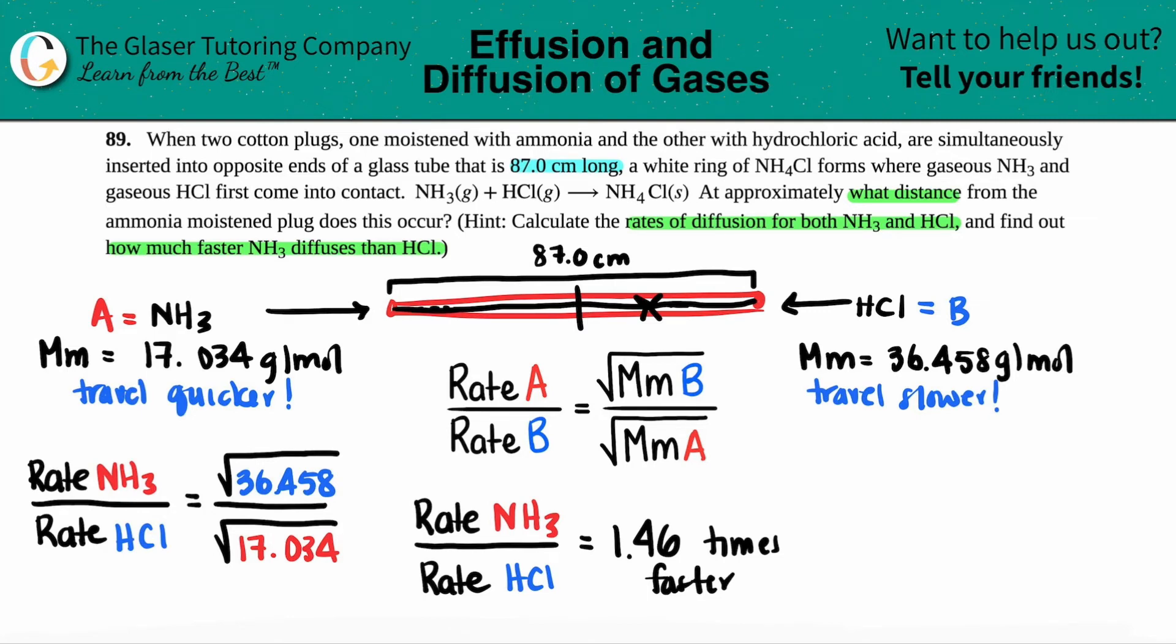Now we're almost there. We still have to find out that distance. Going back to this drawing, if we know that NH3 is traveling 1.46 times faster than the HCl who's traveling slower, and if 1.46 was NH3's number, what was HCl's number if we put this over 1? It was 1. So you could say this was 1x or just x.